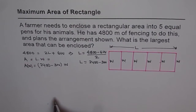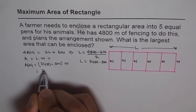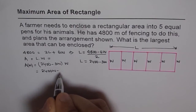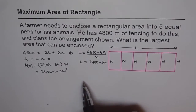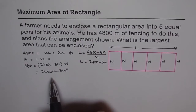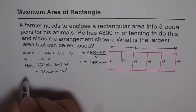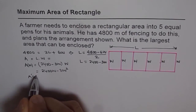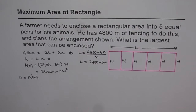Opening the bracket gives A(W) equals 2400W minus 3W squared. To maximize this area, we find the critical number from the derivative A'(W) set equal to zero.